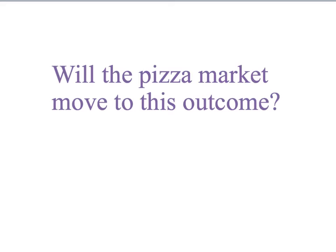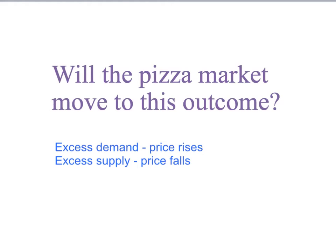For our equilibrium to be a useful prediction it has to be something that will arise in the real world, so we need to ask whether the pizza market will actually move to this outcome. To do that we bring in our dynamic assumptions: if there's excess demand the price will rise, and if there's excess supply the price will fall.